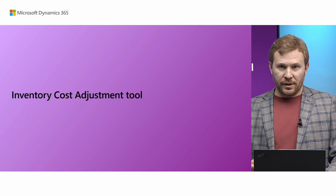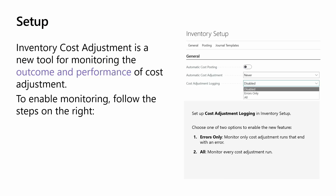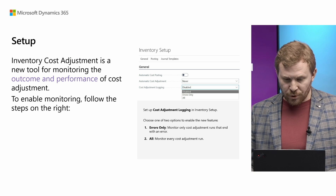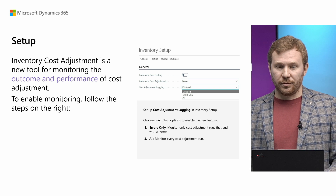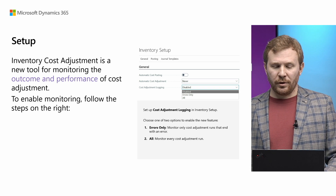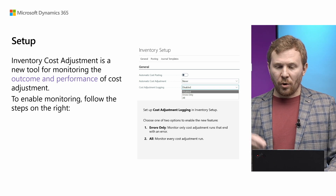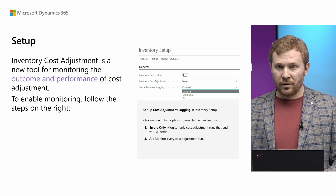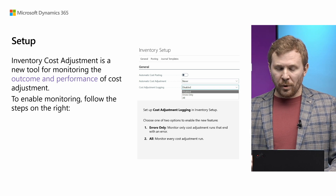To respond to these challenges, we are now presenting the inventory cost adjustment tool — a new tool for monitoring the outcome and performance of cost adjustment. To begin with, go to inventory setup and choose one of two options in the cost adjustment logging field. 'Errors only' will log only those cost adjustment runs that fail, and 'All' will give you the full picture. And now off we go for a demo.